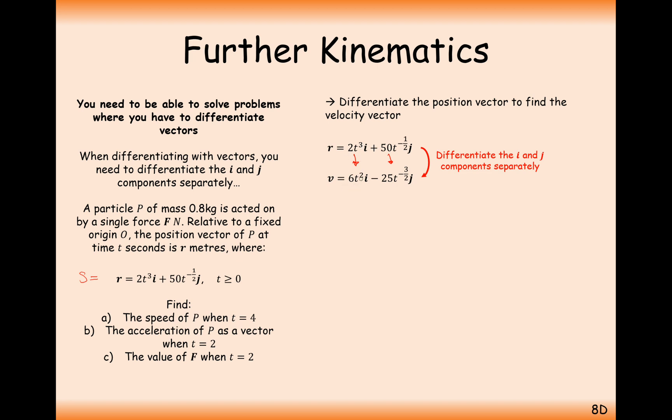The way you do that is you just differentiate the I component and the J component separately. 2t cubed differentiates to 6t squared. And 50t to the power of minus half differentiates to minus 25t to the power of minus 3 over 2. So now let's plug in the value 4 and we'll get a velocity vector at that point in time. Simplify that answer and you get 96i minus 3.125j.